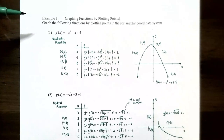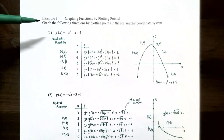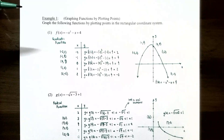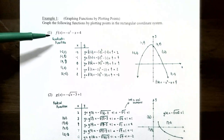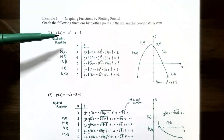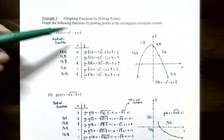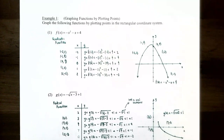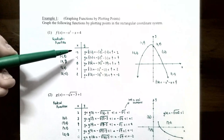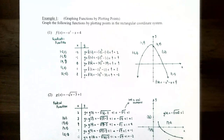In Example 1, we graph functions by plotting points in the rectangular coordinate system. For number one, f(x) = -x² - x + 4, which is a quadratic function since the highest power is 2. To find what the graph looks like, we choose x values from the domain. I chose x = -2, -1, 0, 1, and 2 — some negative, some positive, and zero, which is always a good value to plug in if possible.